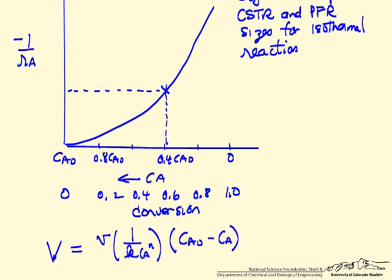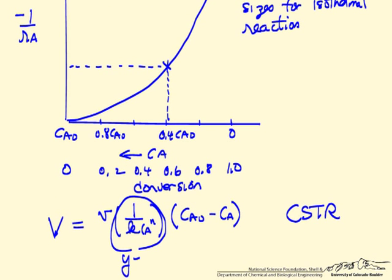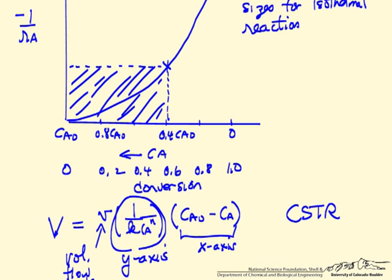I've written the mass balance for a CSTR in a form so it's easy to visualize. This is the y axis, 1 over the rate for a general nth order reaction. This is the volumetric flow rate in the reactor, and this is the concentration difference, the inlet minus the outlet concentration. So this is the x axis, and you can see the x axis times the y axis, this is the area. This area is proportional to the reactor volume for a CSTR.